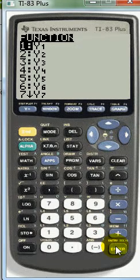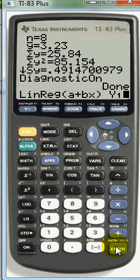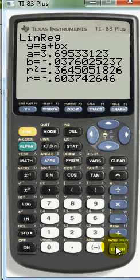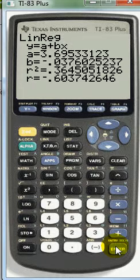Enter and then enter, and now it gives us our a, which is our y-intercept, our b, which is our slope, our r-squared, and our r - calculated all those pieces for us.